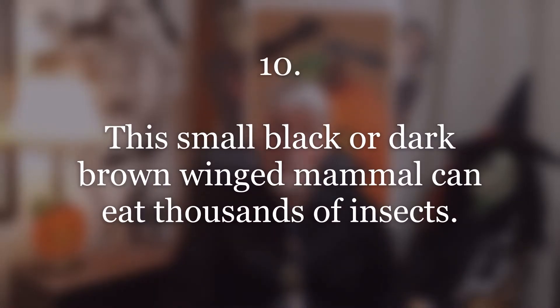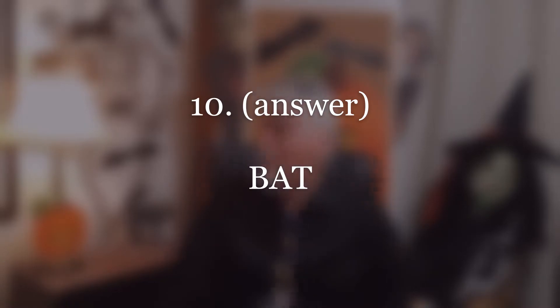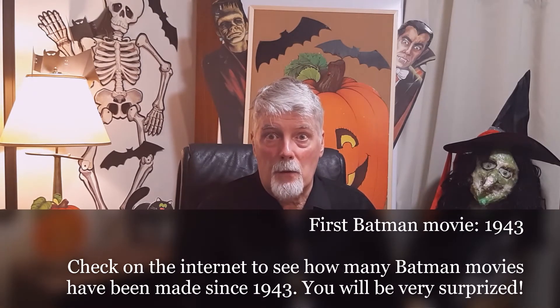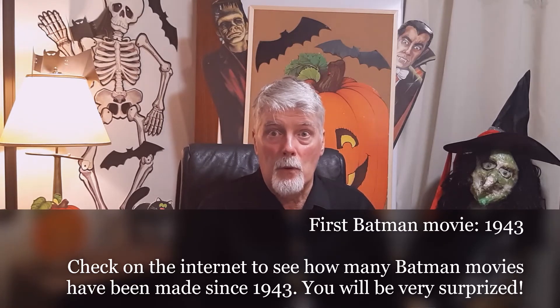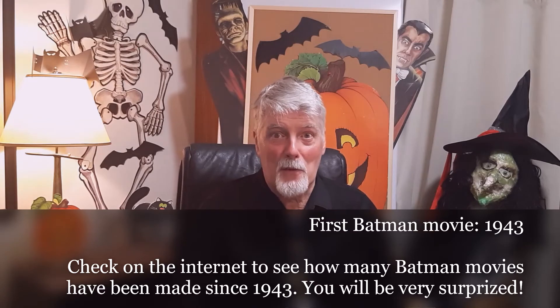Number ten. This small black or dark brown winged mammal can eat thousands of insects. And I bet you got that one — the word is bat. And you can see I have a few bats here flying around. There was a superhero who dressed up as a bat — Batman — and there were actually Batman movies way back in the 1930s or 1940s, black and white, which you could check out on YouTube just for fun.